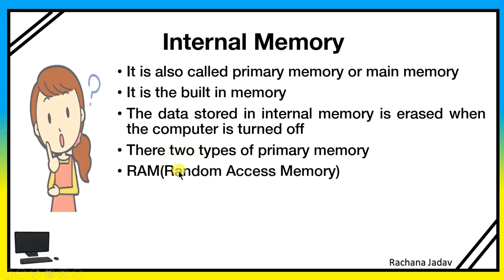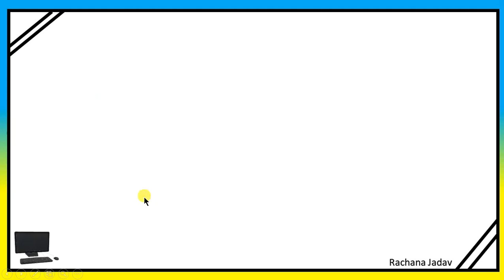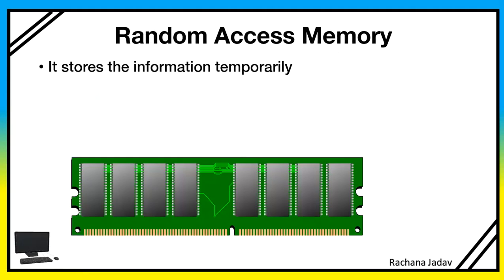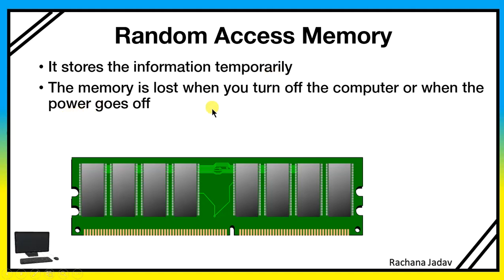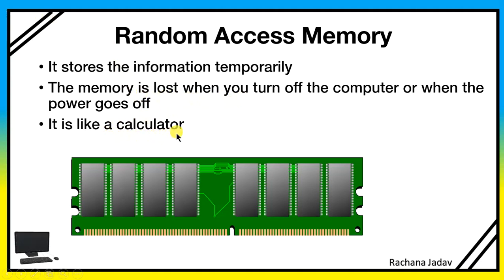There are two types of primary memory: RAM (Random Access Memory) and ROM (Read Only Memory). Random Access Memory stores information temporarily — thodi der ke liye woh memory mein rakta hai. The memory is lost when you turn off the computer or when the power goes off. It is like a calculator — when you leave it for a while, the digits get erased.